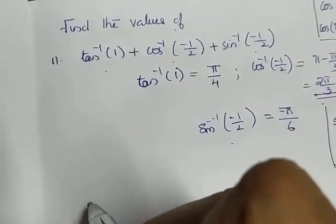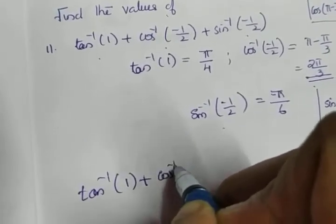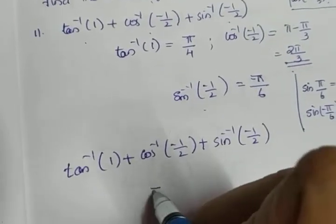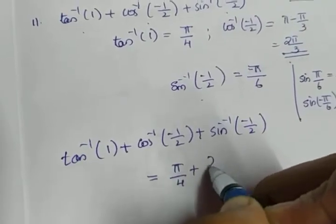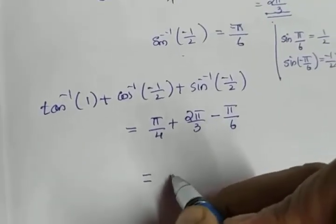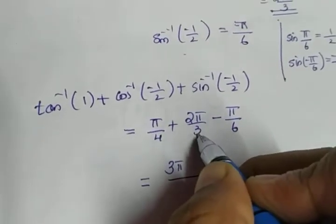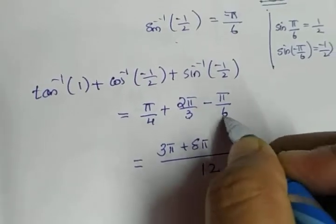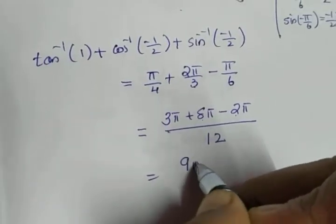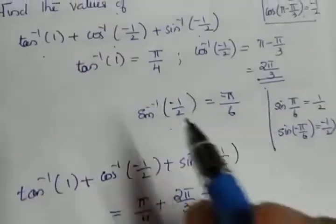Now we calculate: tan inverse of 1 plus cos inverse of minus 1 by 2 plus sin inverse of minus 1 by 2, which equals pi by 4 plus 2 pi by 3 minus pi by 6. Taking the LCM of 4, 3, and 6, the LCM is 12. So we get 3 pi over 12 plus 8 pi over 12 minus 2 pi over 12, giving 9 pi by 12.